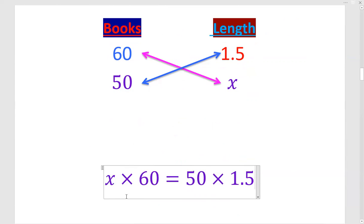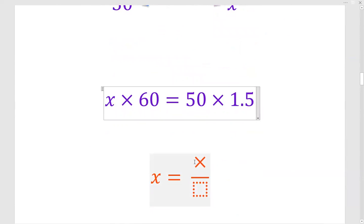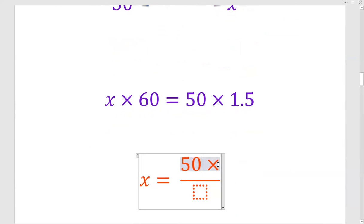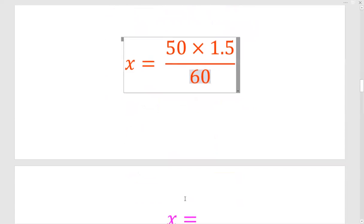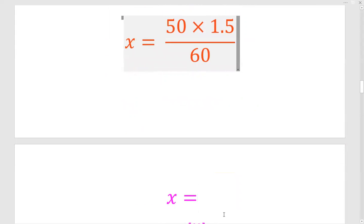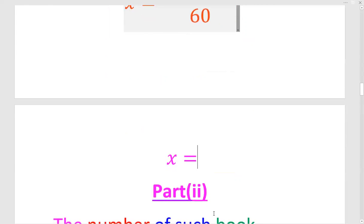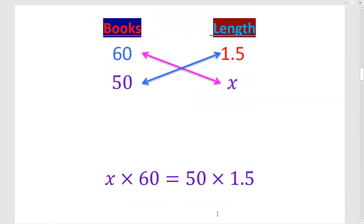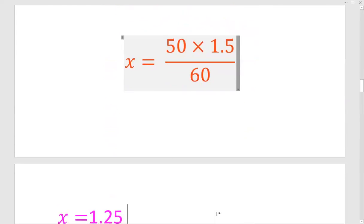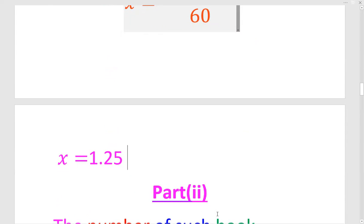After this we have to find value of x. Take it to the other side. When 60 goes to the other side, there will be no change in 50 and 1.5, they will remain the same, and 60 will go and divide. If you have the facility of calculator, you can do it with the help of calculator. Otherwise you can do the manual cutting. Whichever is easier for you, you can work that way. And this length will be 1.25. And this length is in meter, so you will write meter with it.